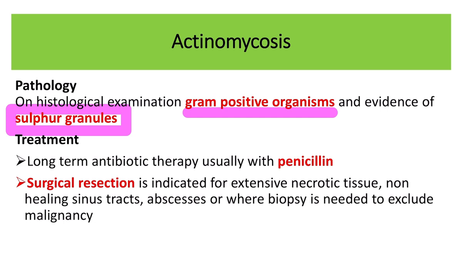Although there are different types of gram-positive organisms — such as Staphylococcus and Streptococcus — they do not have the capability to produce sulfur granules. The sulfur granule is diagnostic for actinomycosis.